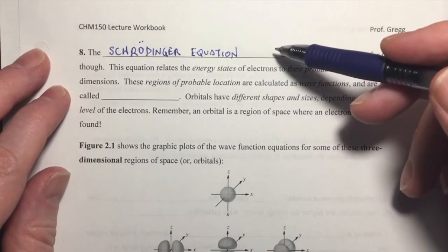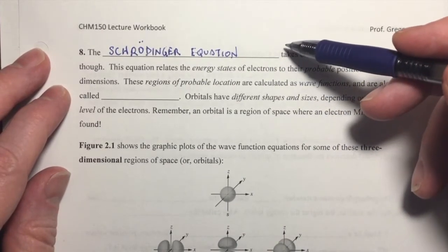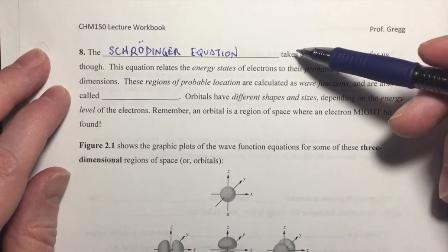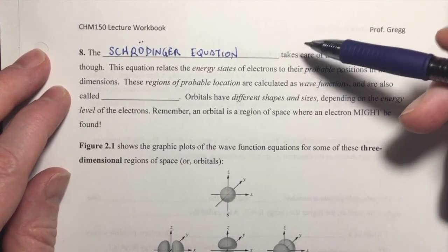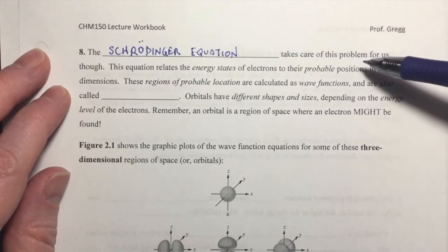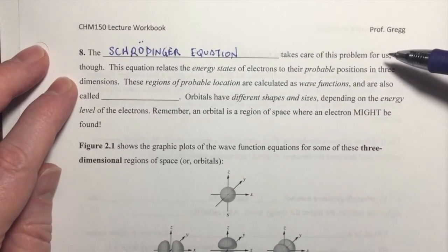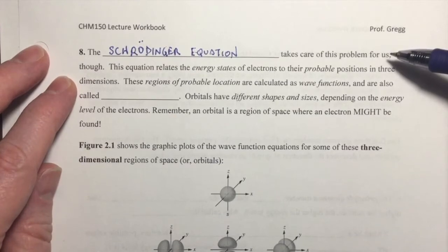Schrödinger comes up with a very important mathematical equation, which we now call the Schrödinger equation. And the Schrödinger equation considers the Heisenberg uncertainty principle, and it considers the wave nature of an electron, and it takes care of some of this problem, I should say, for us, in being able to determine approximately where an electron is going to be.